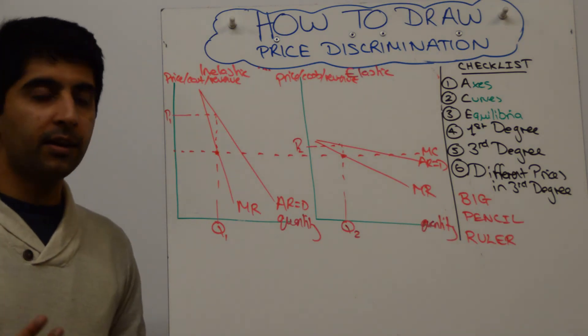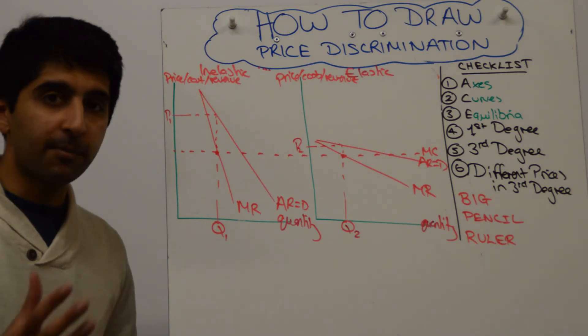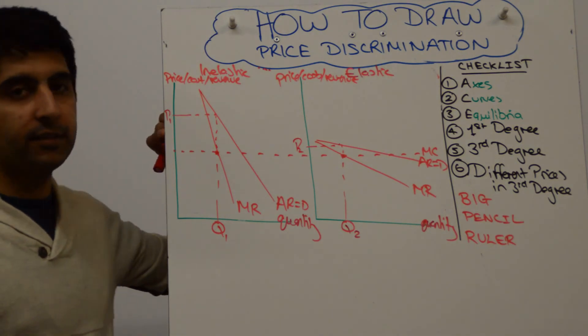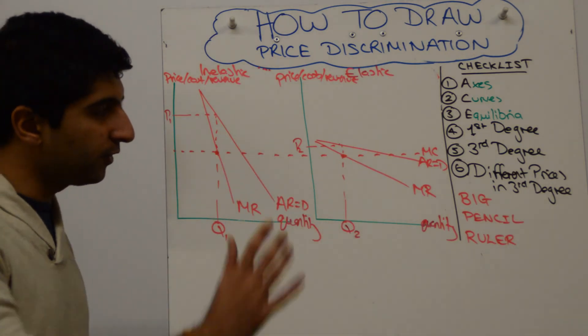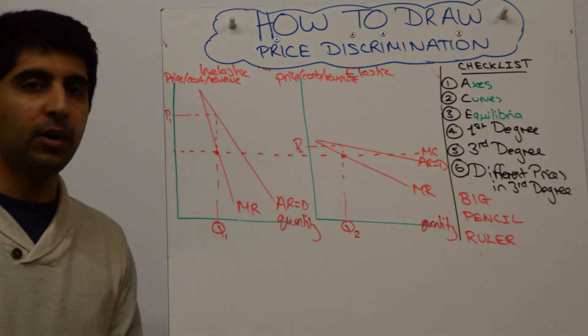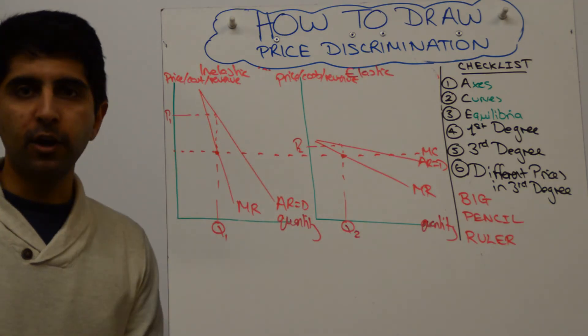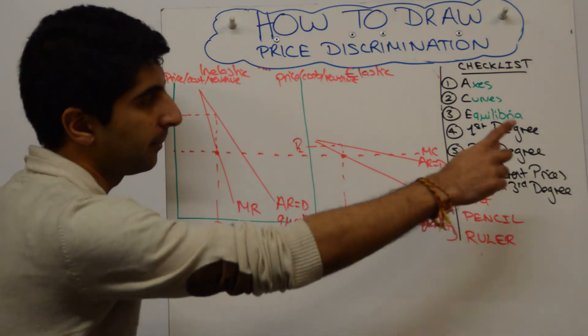You said, look, because of varying elasticities of demand, different market segments. You have a higher price in the peak market, a lower price in the off-peak market. And that's your point made. Absolutely made and nicely argued. Different prices. We've hit number six.